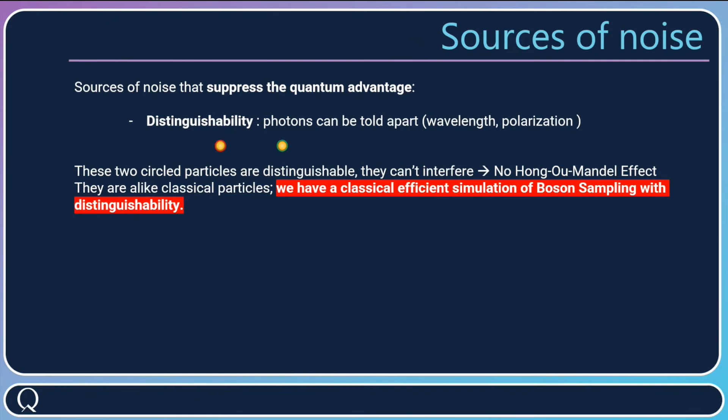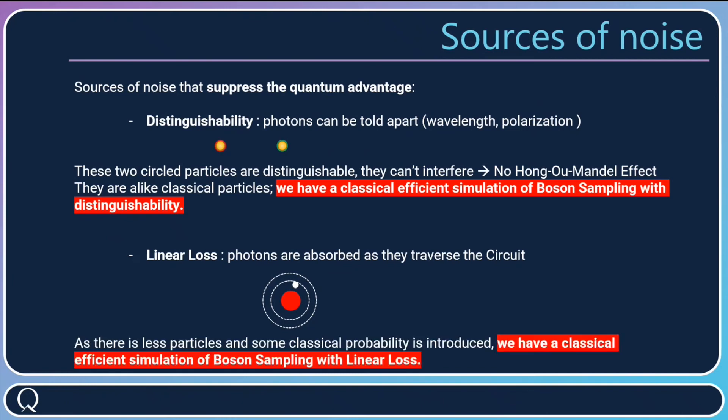Now another source of noise is linear loss. You can picture the photon going through the linear circuit, and at some point it encounters an atom. An atom is made of a nucleus and an electron. The photon goes right to the atom. Then the atom gets excited, so the photon gets absorbed, and through heat dissipation, the atom can de-excite. Now you have a physical understanding of why there is loss in the circuits, because photons get absorbed by atoms that make up the whole linear circuit.